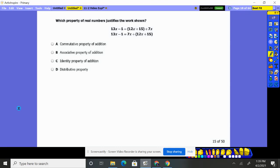Number 15, which property of real numbers justifies the work shown? So what did they do from here to here? They were grouping these together, and then they went ahead and changed. They flipped them from there to this side.